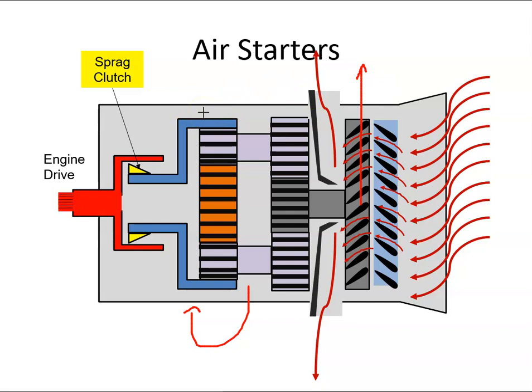So as the annulus rotates, it's connected to the engine drive via a sprag clutch. Now because we have reduced the RPM here, that means we have increased the torque.